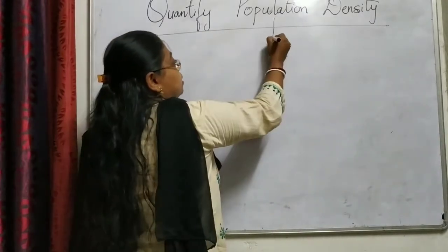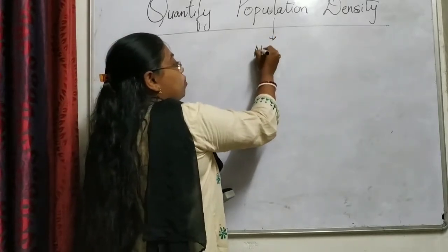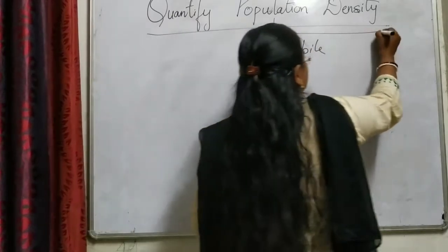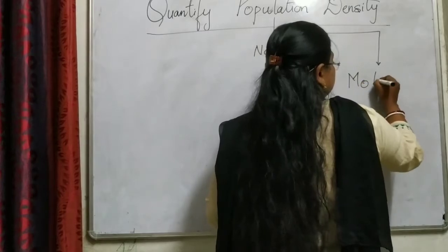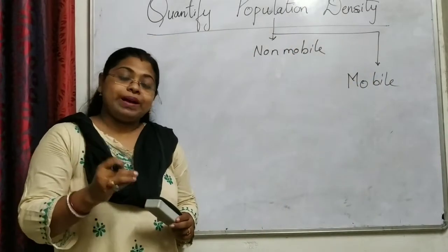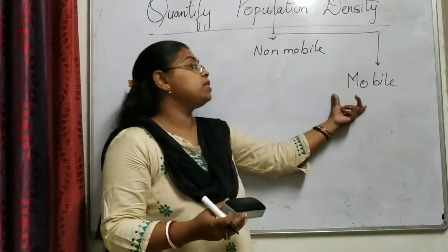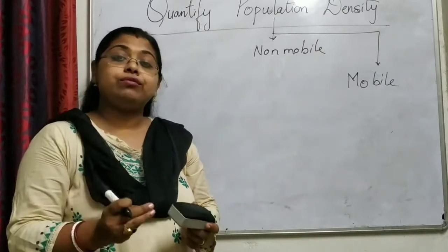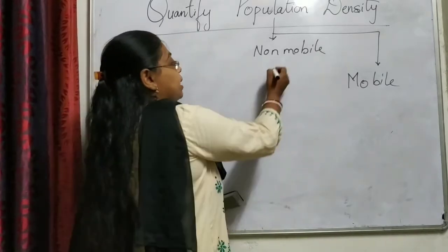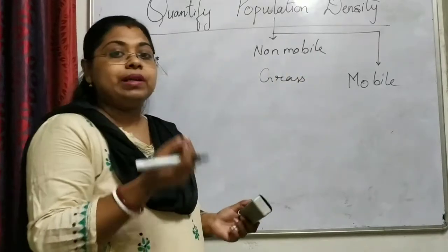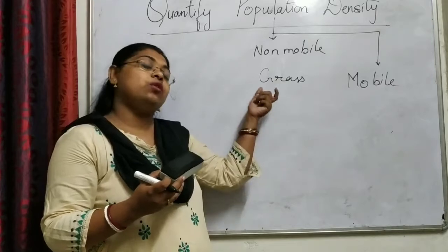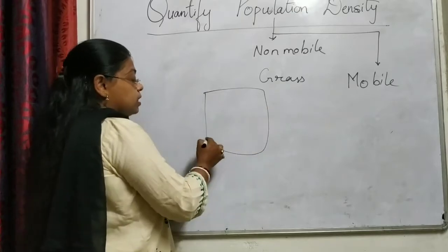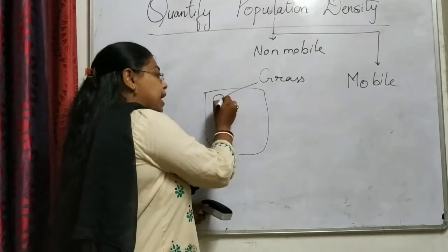For quantification of population density, we need a population. That population can be non-mobile or mobile. Mobile means it has the capacity to move on its own, whereas non-mobile means it is confined to a specific area — such as grasses. Grass will not move from its location; wherever it has grown, it will grow in that position only. So if we take a piece of land, we find a variety of grass at that location.